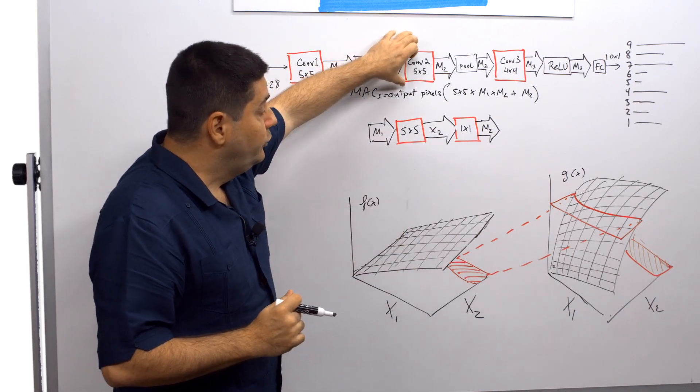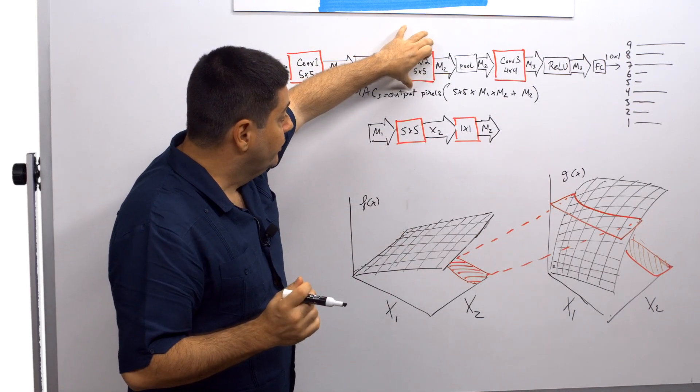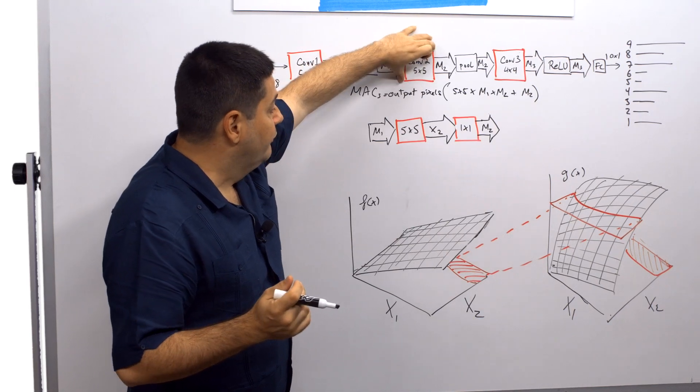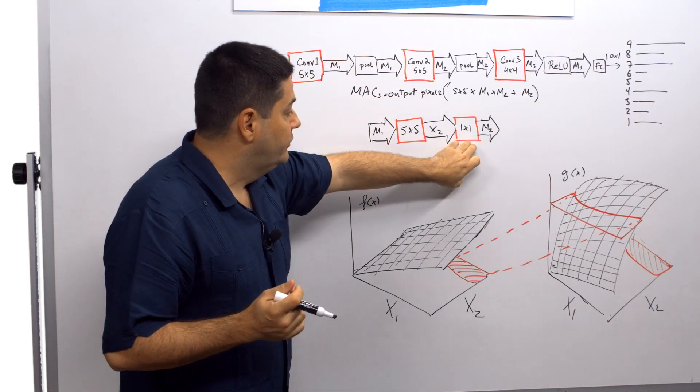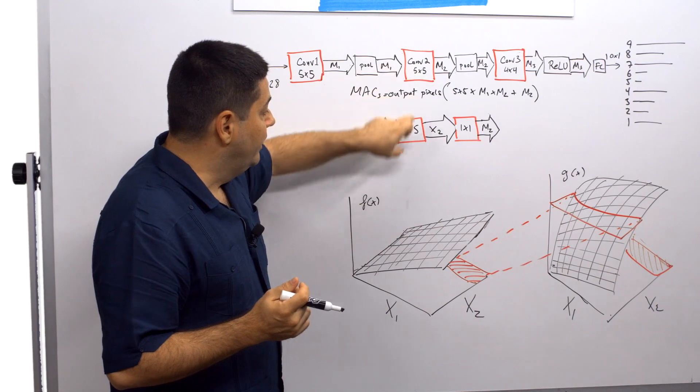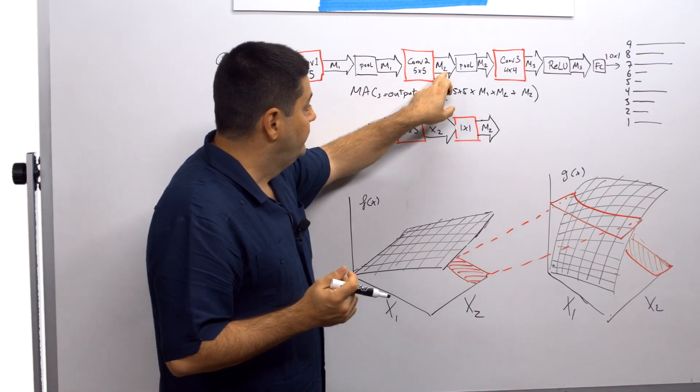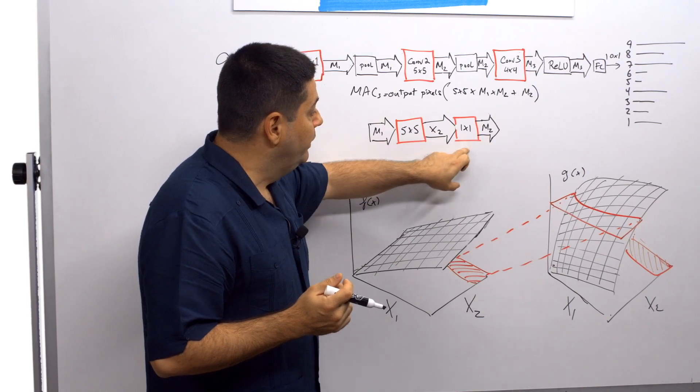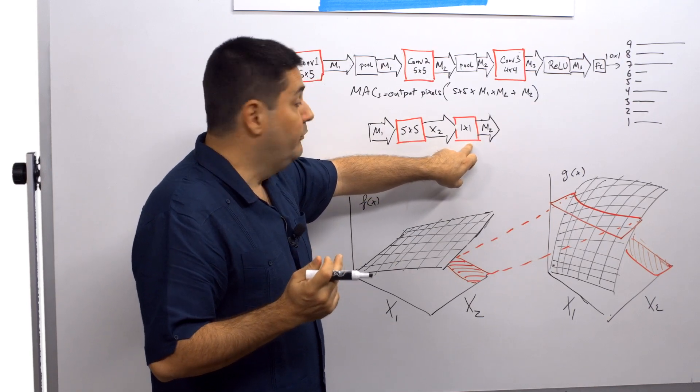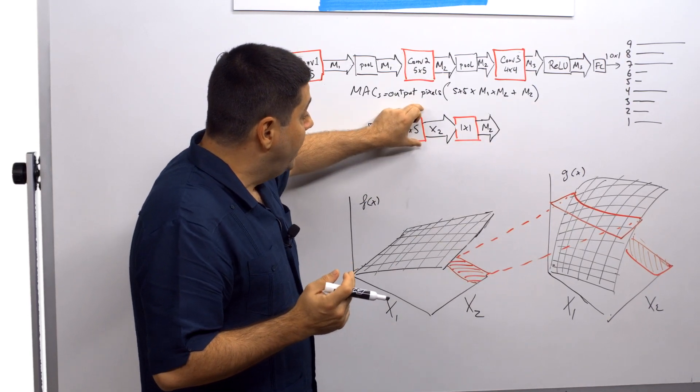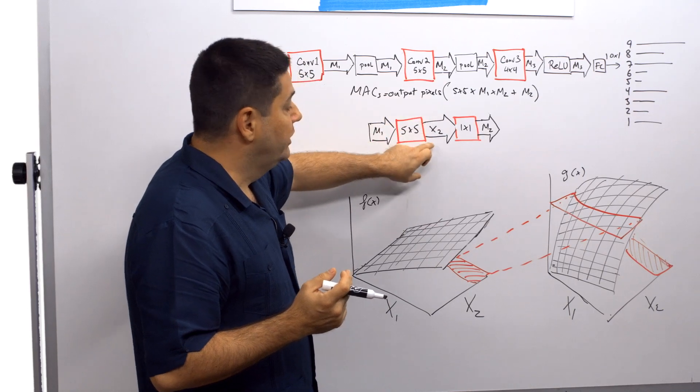So what we do is, using linear algebra, we're going to factor, let's take this block for example, into two components. Here we have a 5 by 5 filter. The same inputs go in, same outputs go out. But now we introduced a new 1 by 1 convolution in here. And we have this intermediate dimension x2.